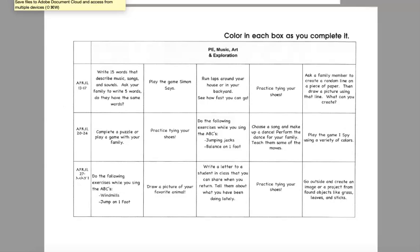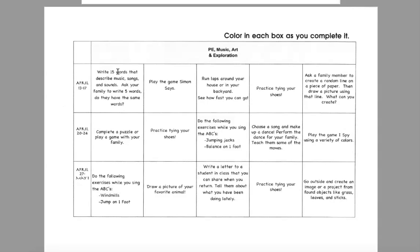For PE, music, art, and exploration, these are just optional suggestions — fun and not meant to be stressful. As you complete them, color in the box. One activity is music-related: write or say 15 words that describe music, songs, and sounds — things like loud and soft that Ms. Han has been teaching you. Then ask a family member to think of five words themselves and compare to see if you came up with the same ones.